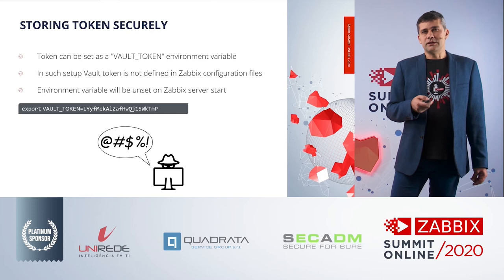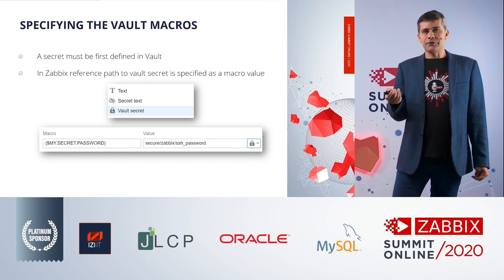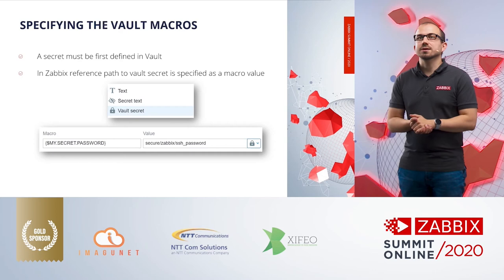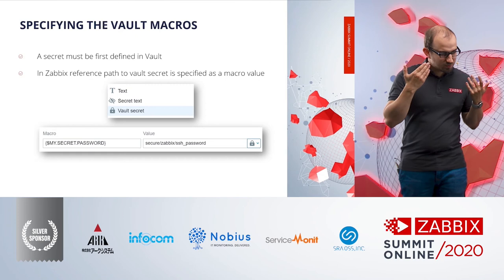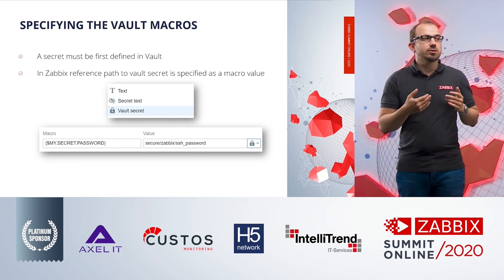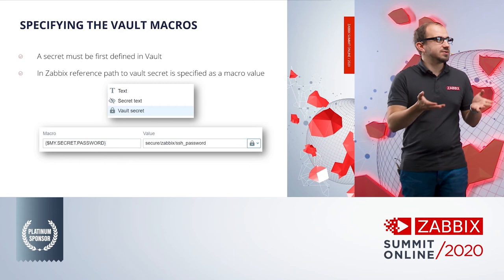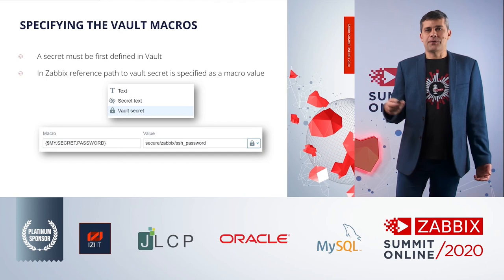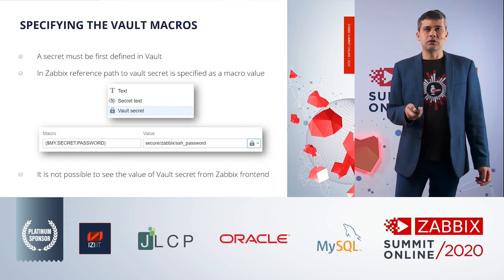There are three types of macros: simple macros, secret macros, and vault macros. When using a vault macro, you provide Zabbix with a reference path showing where in the vault your secrets are kept. First, you create a secret in the vault, then specify the path. There is no way from the Zabbix frontend to see the contents at that path — that is only known to the Zabbix server.